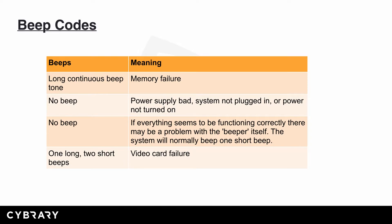Now let's look at some examples of beep codes. A long, continuous beep tone indicates a memory failure. No beep could mean the power supply is bad, the system is not plugged in, or the power is not turned on. Other indicators for no beep: if everything seems to be functioning correctly, there may be a problem with the beeper itself. The system would normally produce one short beep.